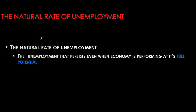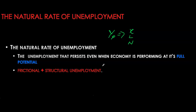Let's now look at the natural rate of unemployment. There is some unemployment that will always persist even if the economy is otherwise healthy — specifically the unemployment rate that persists even when the economy is performing at full potential. Full potential level of production refers to the level of real GDP when all resources — land, labour, and capital — are being used efficiently. The natural rate of unemployment is made up of two types: frictional and structural unemployment.